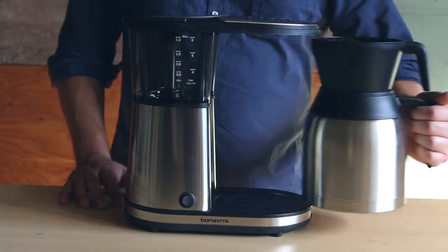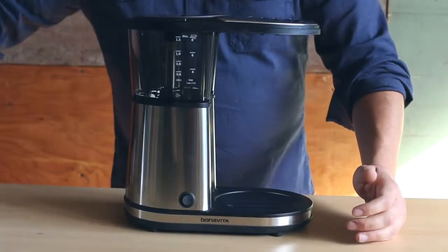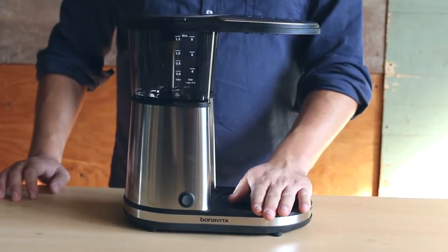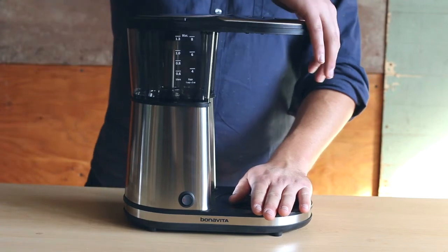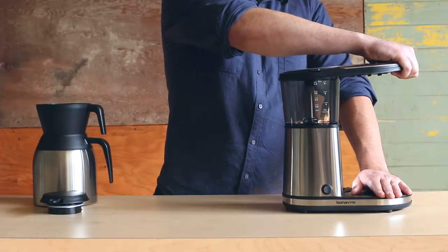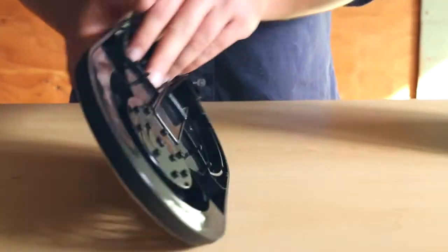Remove the filter and carafe from the brewer and use one hand to anchor down the brewer where the carafe sits. Using your other hand, peel the brewer lid off by pulling up from the front.